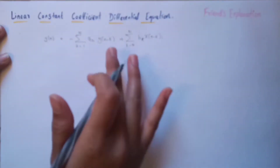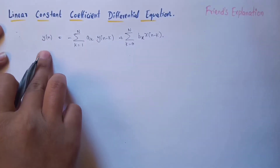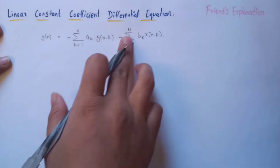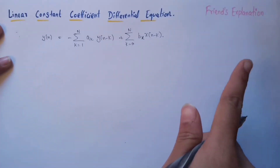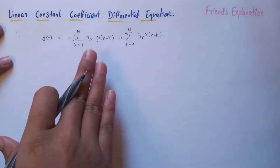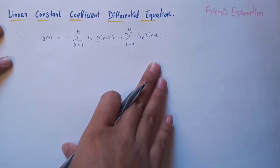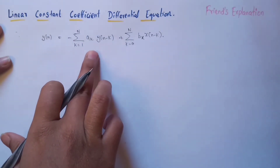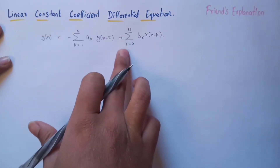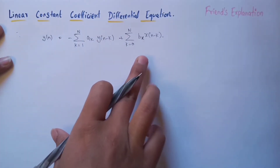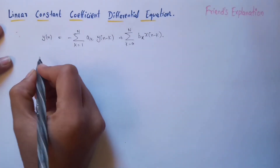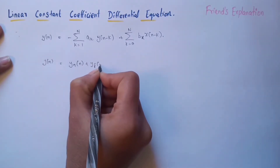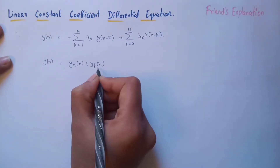So the present output is in terms of past output and present and past input. This equation represents the total system response, where one part is the zero-input response and the other is the zero-state response — just like in control systems. The general solution is y(n) = y_N(n) + y_f(n), where y_N(n) is the natural response and y_f(n) is the forced response.